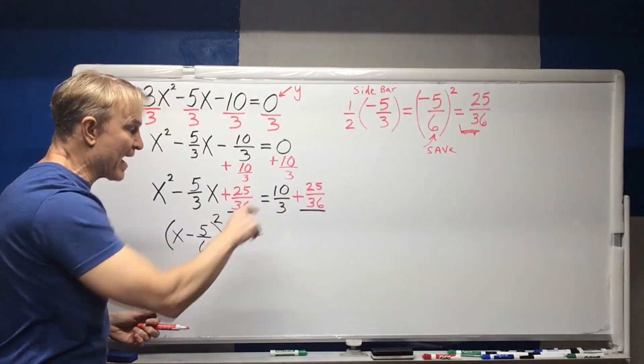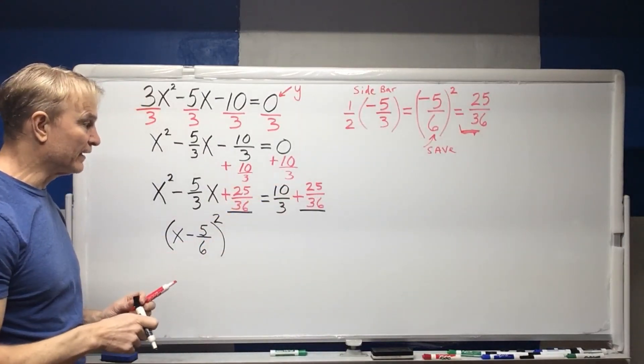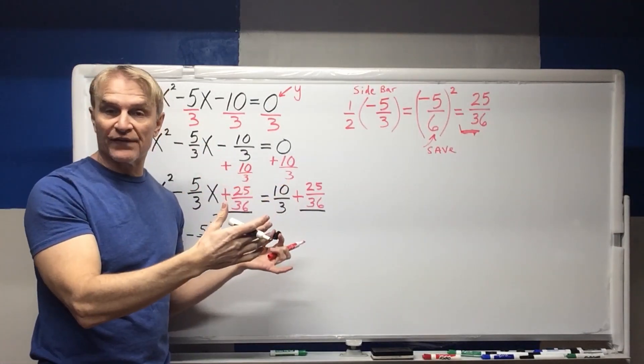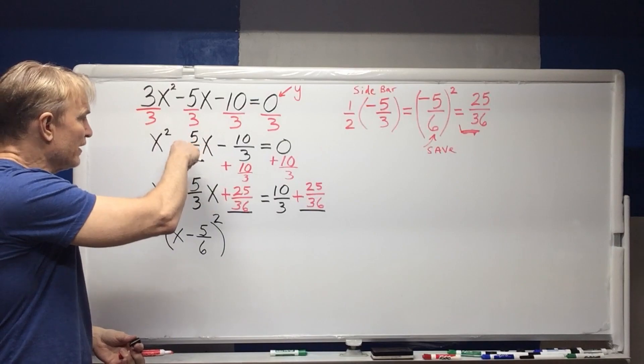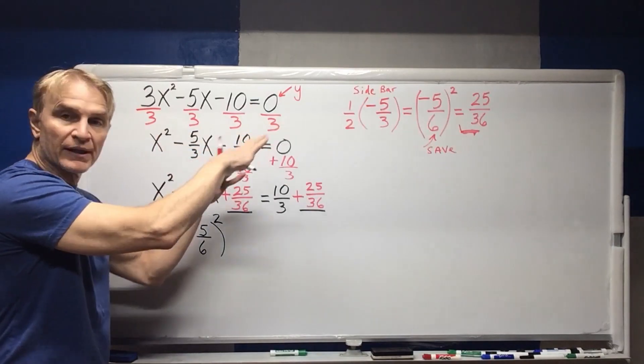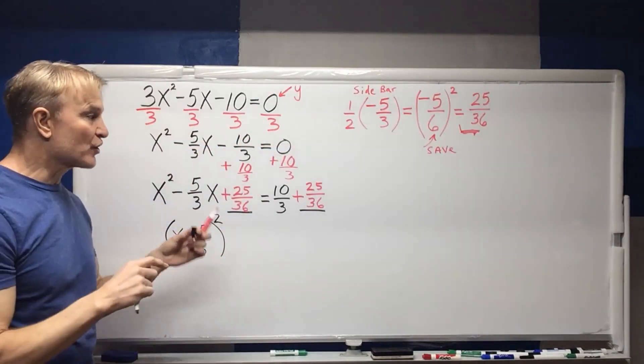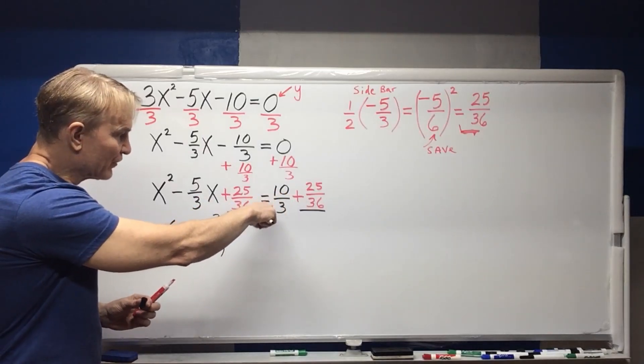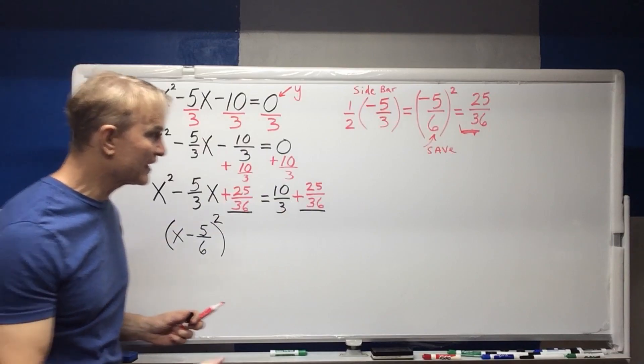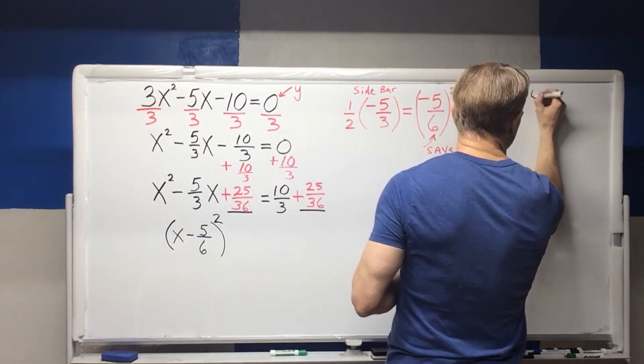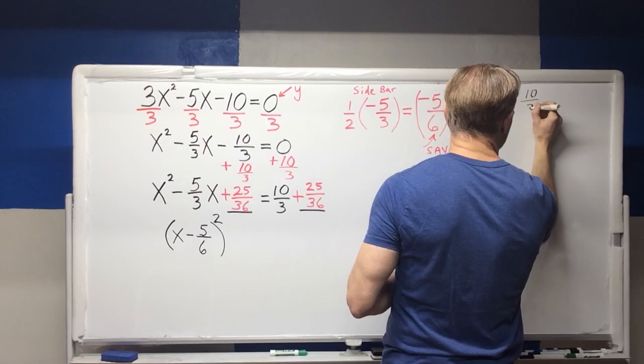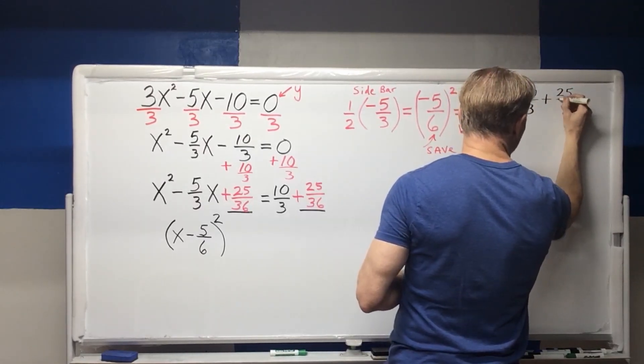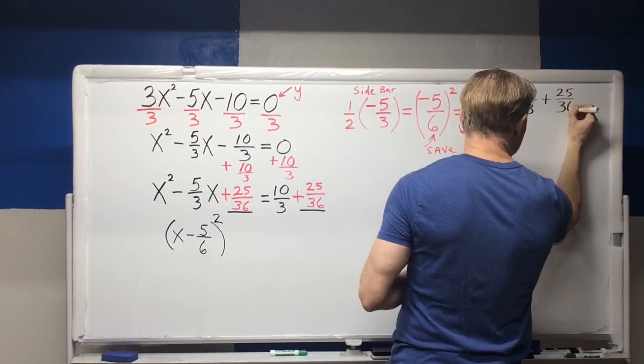Now on this side, we have to just do the math over here. Sometimes people find a little difficulty because if you have a fraction here, people get a little more confused sometimes. So what I'm going to do over here is I'm going to quickly add these. I'm going to sidebar this. So ten thirds plus twenty five thirty sixths.